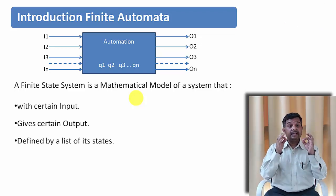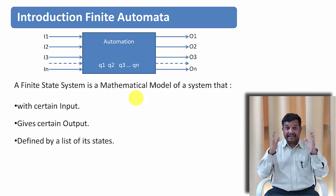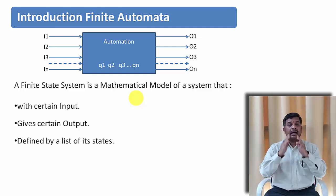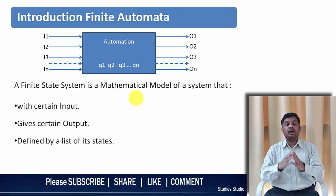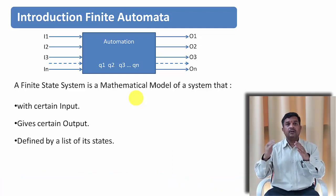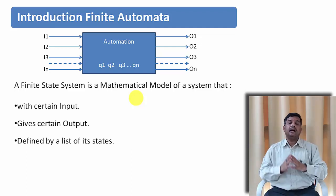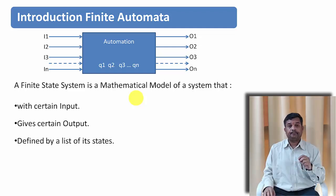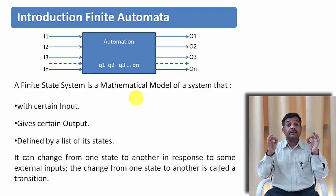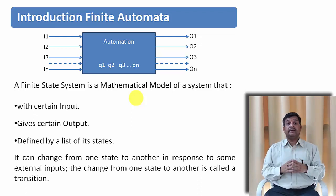Next thing is, it is defined by a list of states. From one state it will transfer to another state, and from that state it will transfer to another state. So like that, after a certain number of changes, you will get a final output which is desired. And the state can change from one state to another state in response to some external input. And the change from one state to another state is called transition.